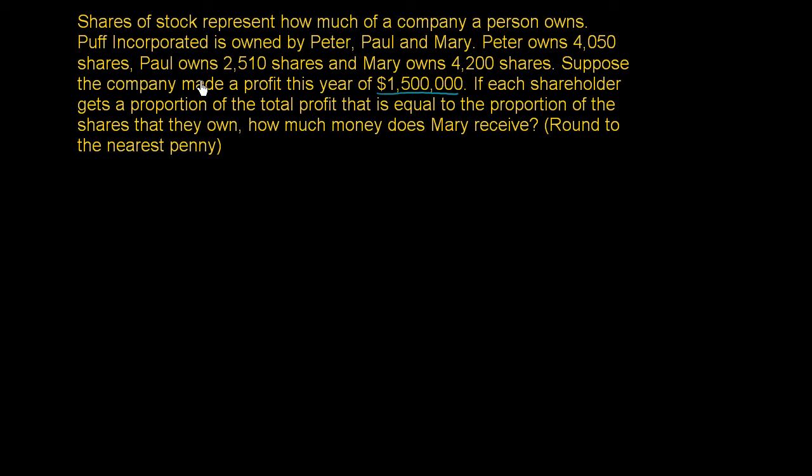Mary owns 4,200 shares. And how many total shares are there in the company? Well, the only owners of this company are Peter, Paul, and Mary. So the total number of shares are the sum of Peter, Paul, and Mary's shares.